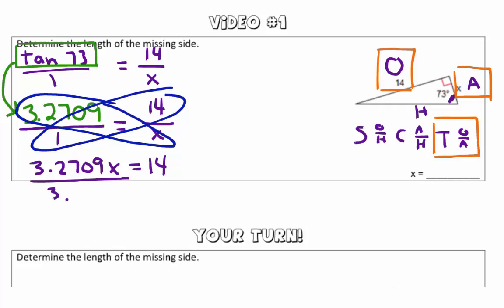To get X by itself, we know we have to divide both sides by 3.2709. So, we get that X is approximately 4.3. Nice work!